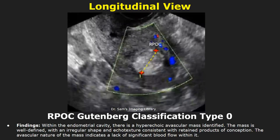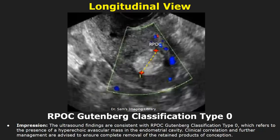Here are RPOC reports with Gutenberg classification. For a type 0 RPOC, the findings will include a hyperechoic avascular mass. The avascular nature of the mass indicates a lack of significant blood flow within it. In the impression, you can mention the type 0 classification along with the presence of the hyperechoic avascular mass, and then write about clinical correlation.